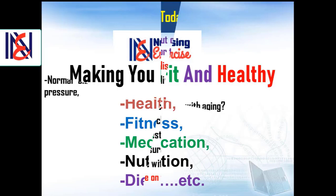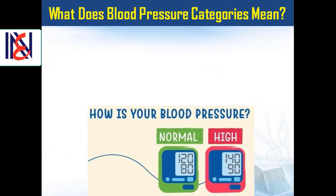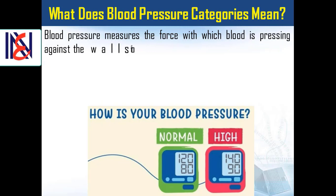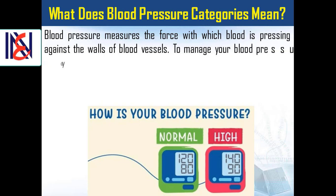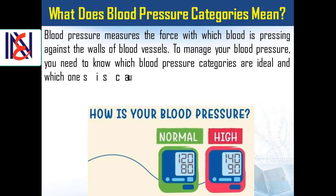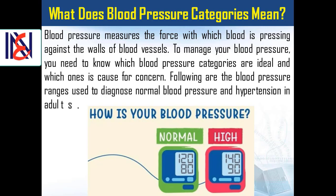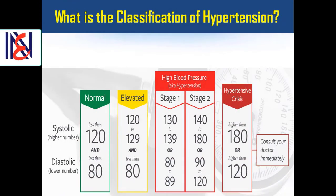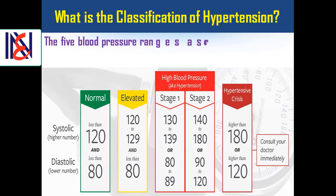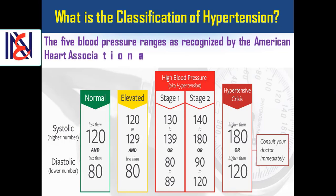Let's start our presentation. Blood pressure measures the force with which blood is pressing against the walls of blood vessels. To manage your blood pressure, you need to know which blood pressure categories are ideal and which ones are cause for concern. The five blood pressure ranges, as recognized by the American Heart Association, are explained below.